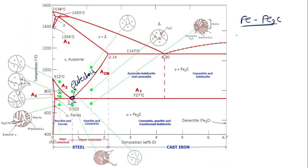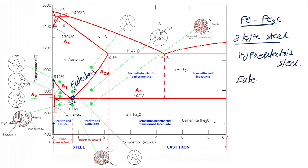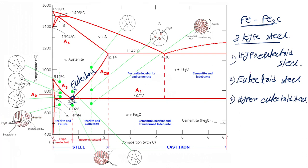Now, there are three types of steel. One is hypo-eutectoid steel, one is eutectoid steel, and the third is hyper-eutectoid steel. How we classify these three steels is based on the carbon percentage. For hypo-eutectoid steel, carbon percentage is less than 0.76. For eutectoid steel, C equals 0.76. And for hyper-eutectoid steel, C is greater than 0.76.